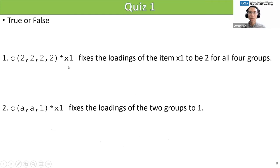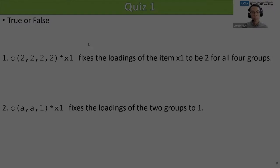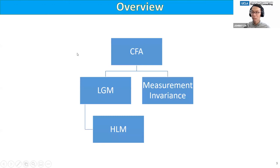Any questions about that syntax? If not, we're going to quiz you to see if you're paying attention. The first question: C(2,2,2,2)-star X1 fixes the loadings of item X1 to be two for all four groups — that's true. The second: C(A,A,1)-star X1 fixes the loadings of the two groups to one — that's false. Good job, almost all of you got both. It's going to be a long seminar, so it's good that you're already focused.